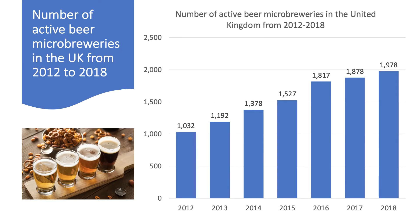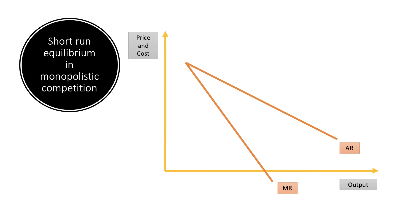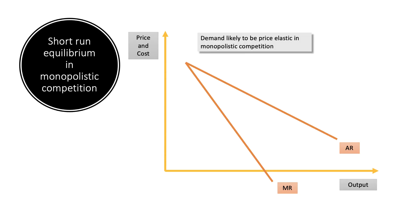Craft beer is another good example, with a huge increase in people setting up micro breweries. BrewDog is the biggest and a very successful brand, but there are many craft beer brands — nearly 2,000 micro breweries in the UK, each producing different flavors, tastes, and products. This is in many ways monopolistic competition, even though there are some big giants in the industrial beer field. So how is short-run price and output determined in this market structure? The starting point is a fairly elastic, downward-sloping demand curve, because firms are selling differentiated products.